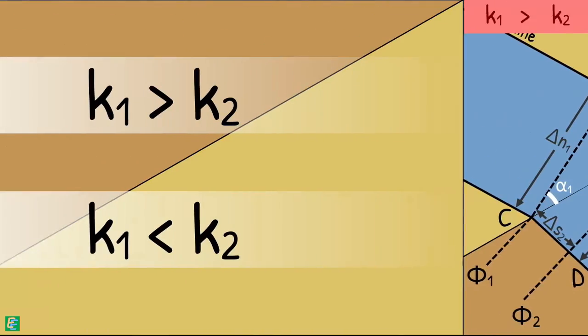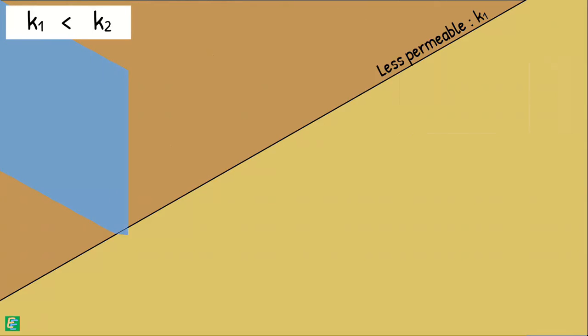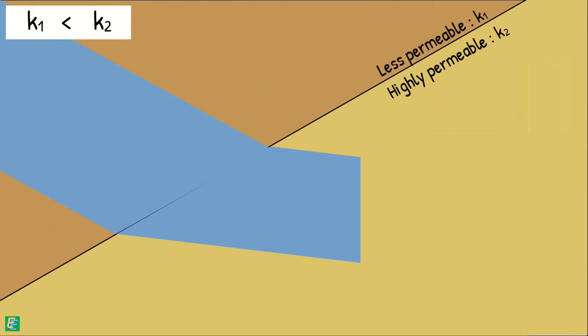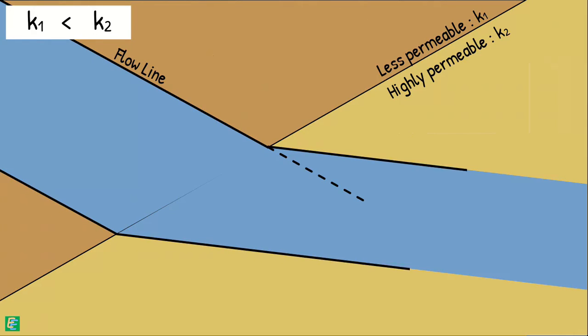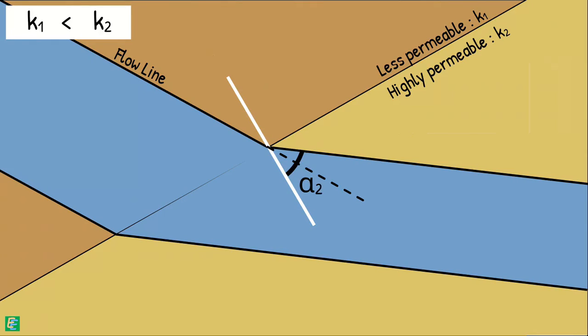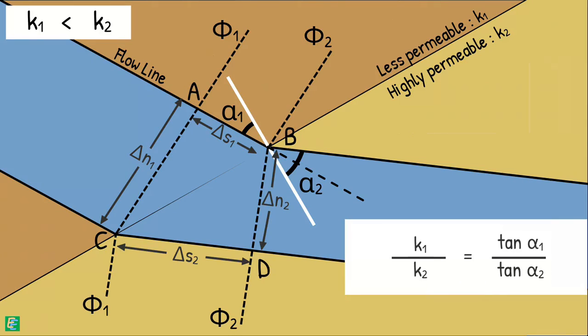Similarly, in Case 2 where k1 is less than k2, flow is from a low permeable or dense medium to a highly permeable or rare medium. In such a case the flow line gets deflected away from the normal and the exit angle alpha 2 is greater than the incident angle alpha 1. Using the same procedure as in Case 1, it can be shown that k1 / k2 = tan(alpha 1) / tan(alpha 2).